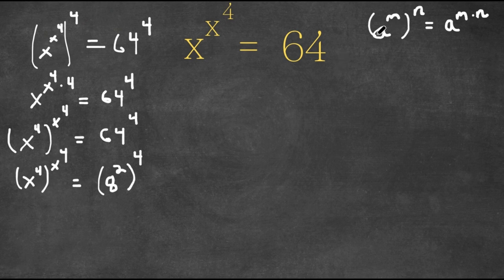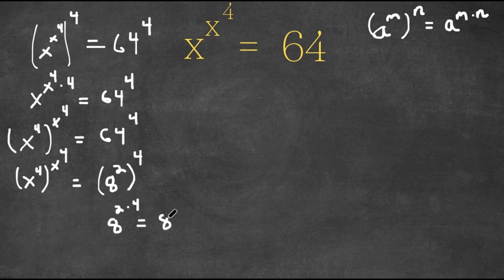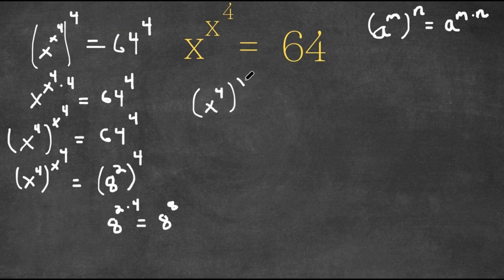Remember this property: if we have a to the power of m to the power of n, this equals a to the power of m times n. So 8 to the power of 2 to the power of 4 equals 8 to the power of 2 times 4, which is 8 to the power of 8. So now I'm going to write x to the power of 4 to the power of x to the power of 4 equals 8 to the power of 8.